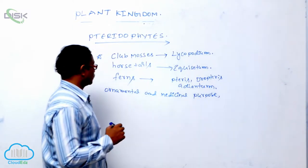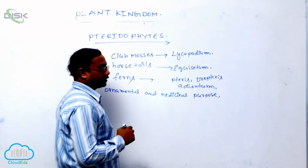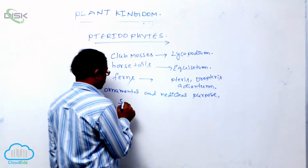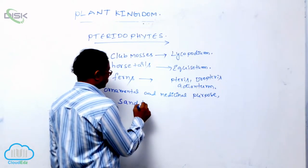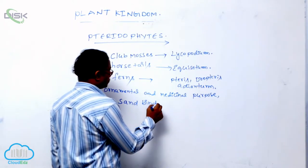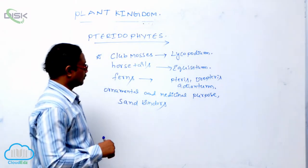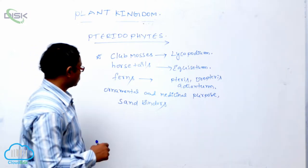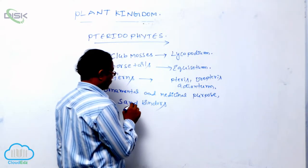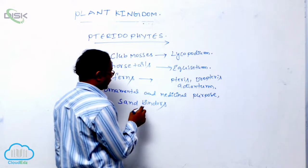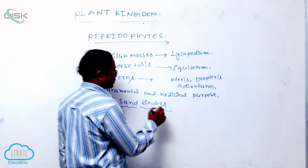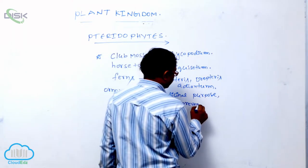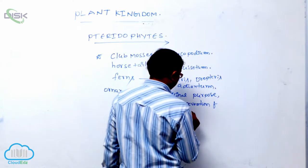Pteridophytes are generally grown for ornamental and medicinal purposes. They grow as soil binders or sand binders, acting as sand binders for prevention of soil erosion during floods in the rainy season.